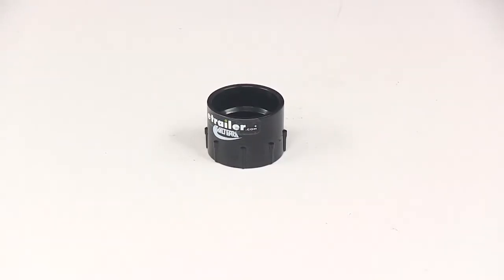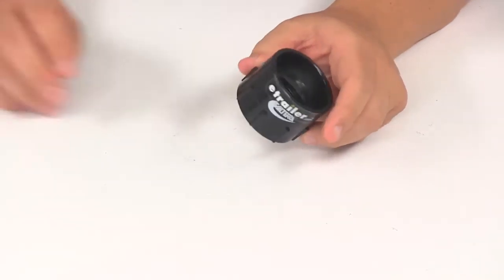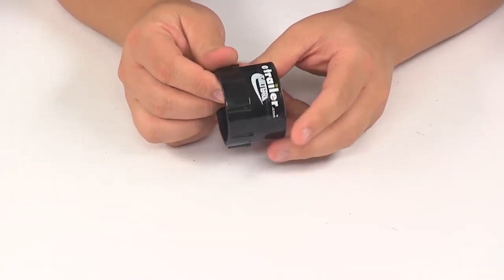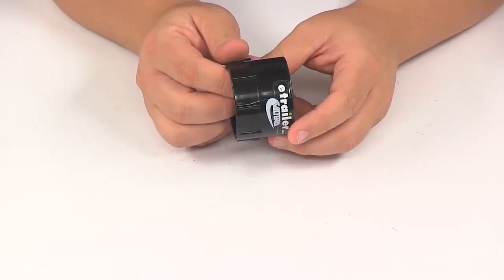Today we're going to be taking a look at the Valterra DWV Female Adapter. This fitting is made from durable ABS plastic construction. It's going to connect two pipes together in your RV's drain system.